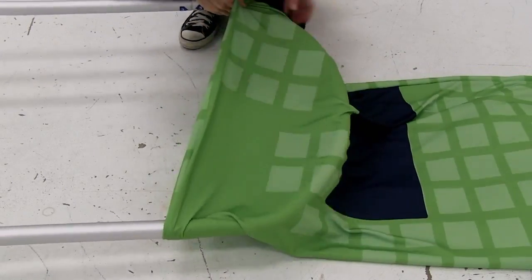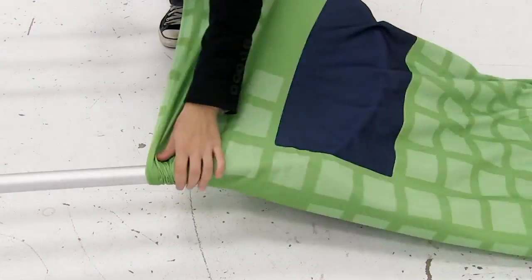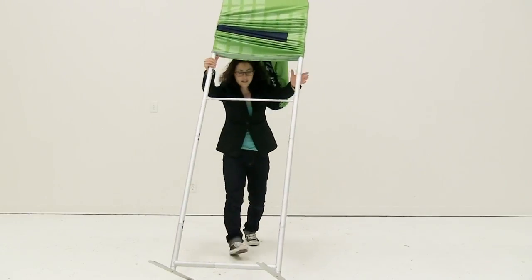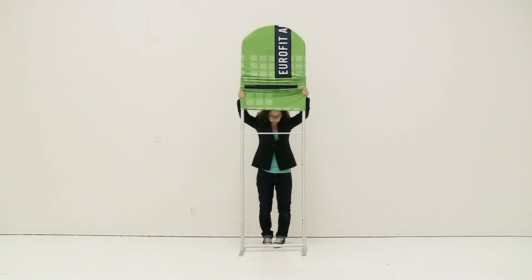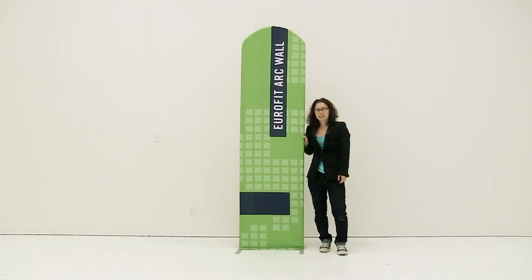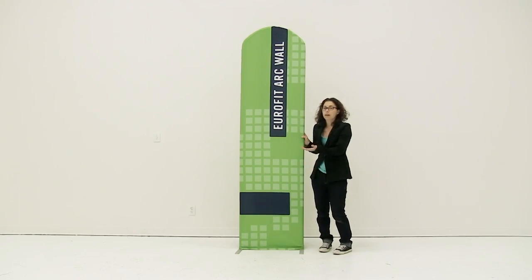You're going to align the seams of the graphic to the sides of the display. Once you've gotten your graphic about halfway on, you can lift up your display and then continue to pull down the graphic. And it's just that easy to set up your Eurofit Arc wall display.